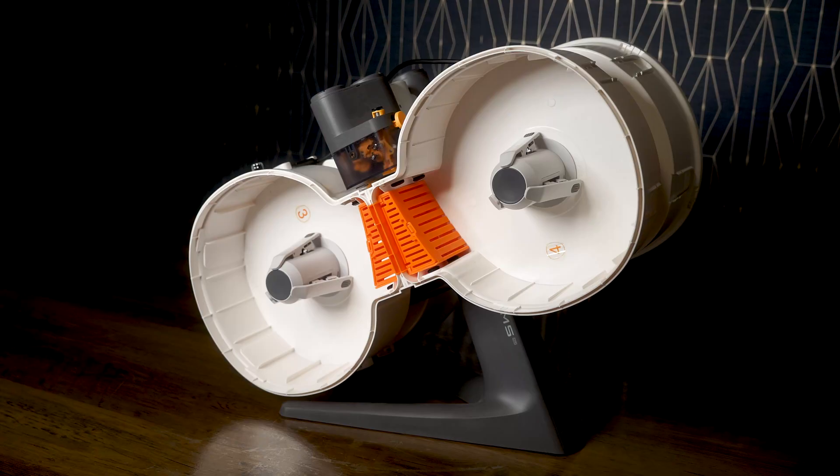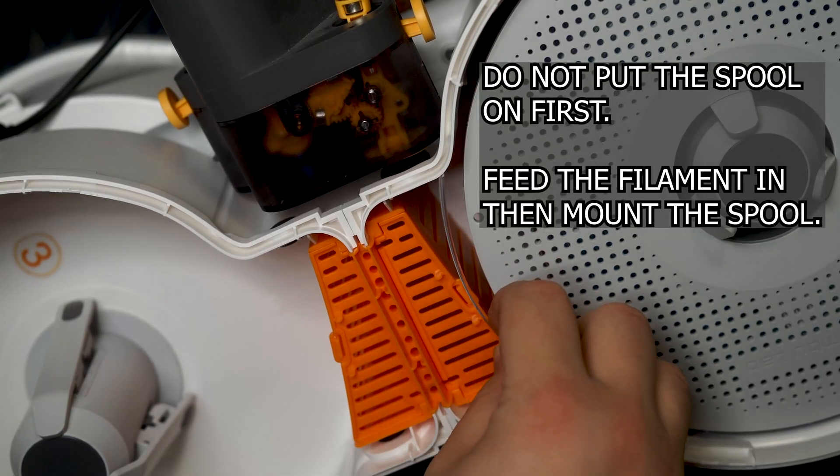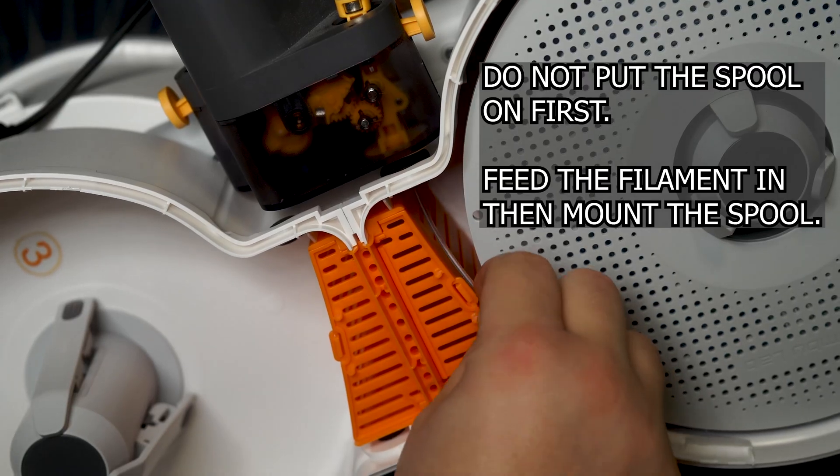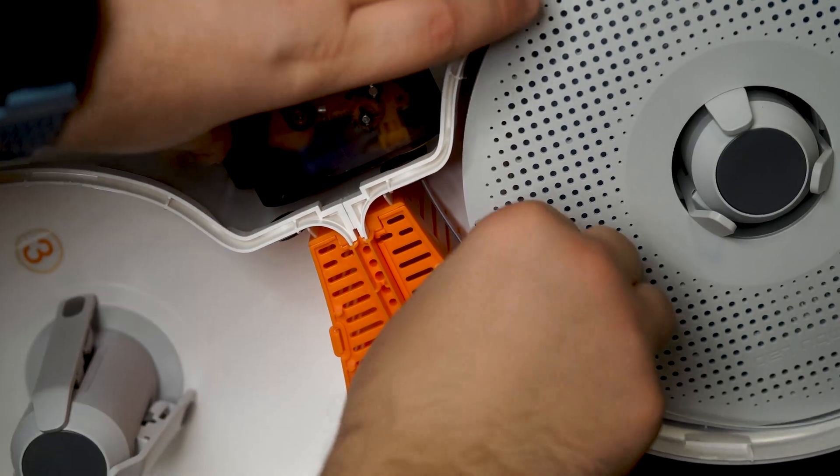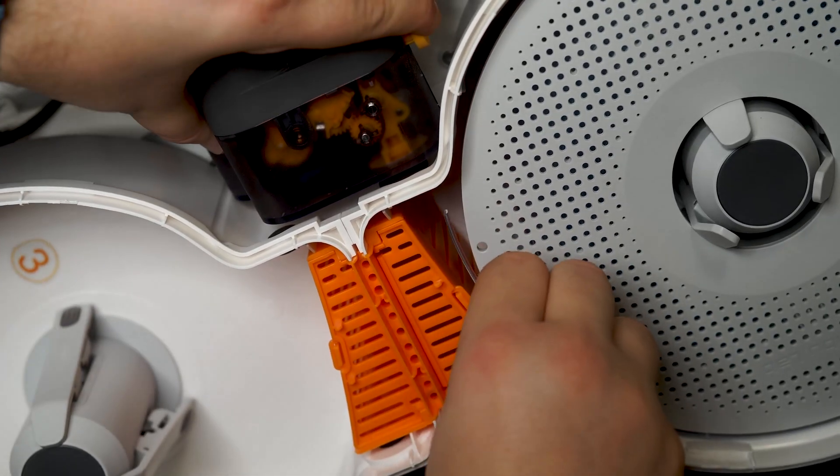For us to be able to install the filament inside this enclosure, you'll first have to feed the head of the filament into the AMS Light before putting the filament spool on the roller. This is because the enclosure is so compact it will barely have any room for your fingers to push the filament in.